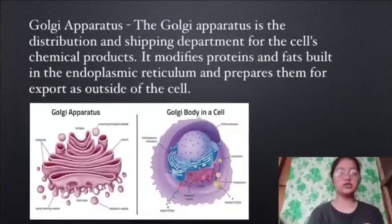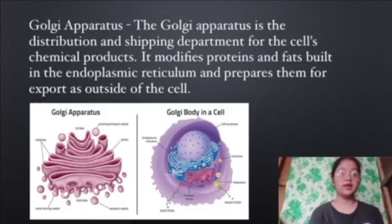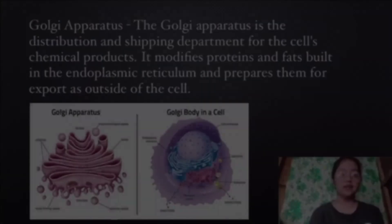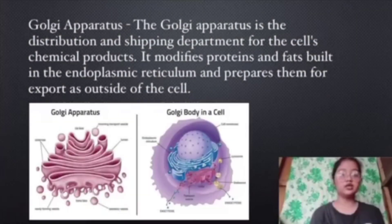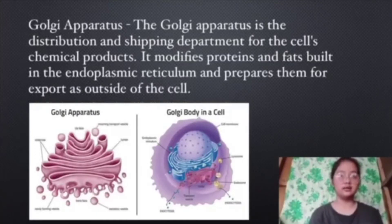Golgi apparatus. The Golgi apparatus is the distribution and shipping department for the cell's chemical products. It modifies proteins and fats built in the endoplasmic reticulum and prepares them for export outside of the cell.